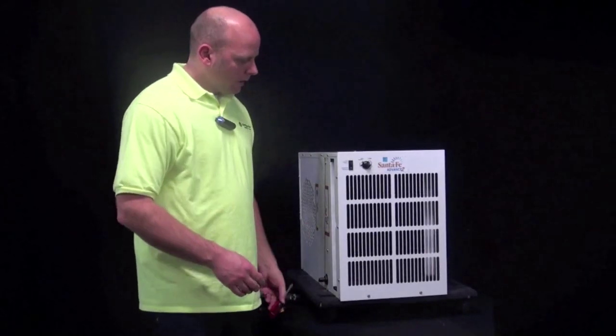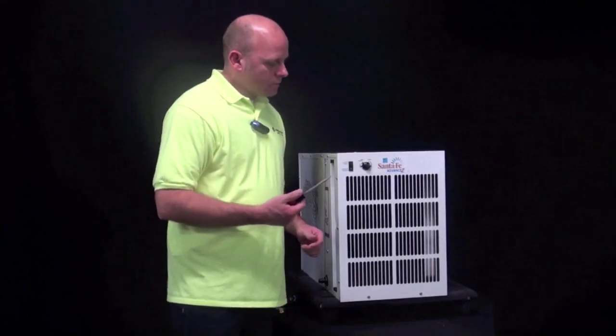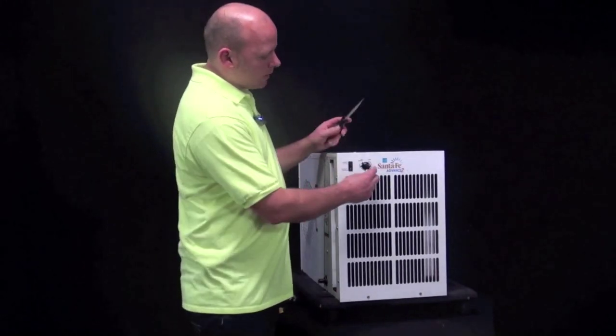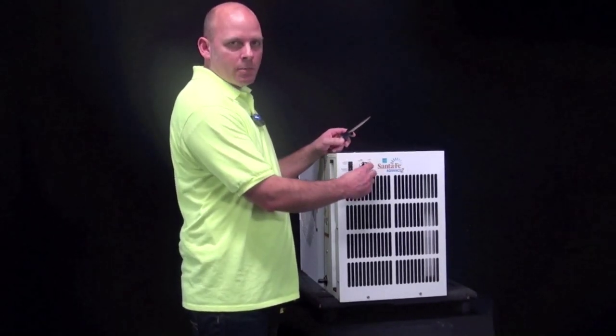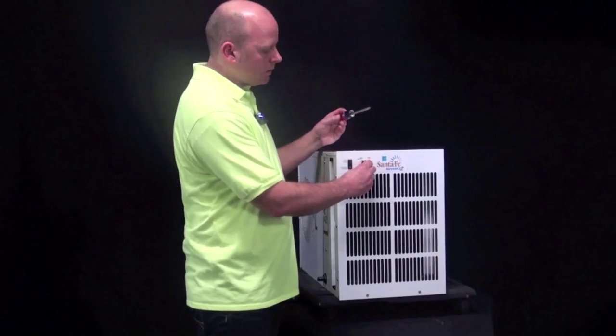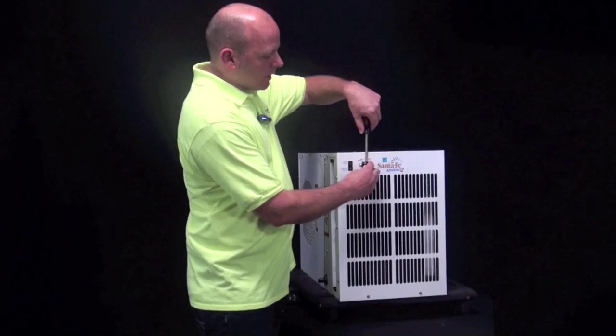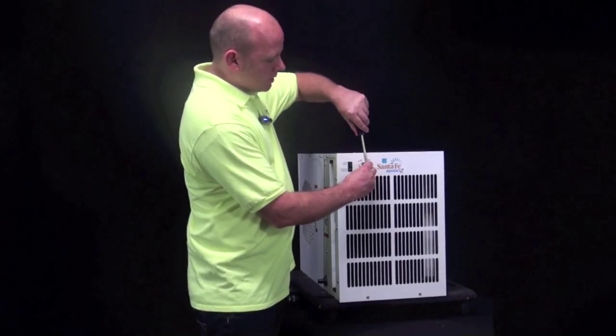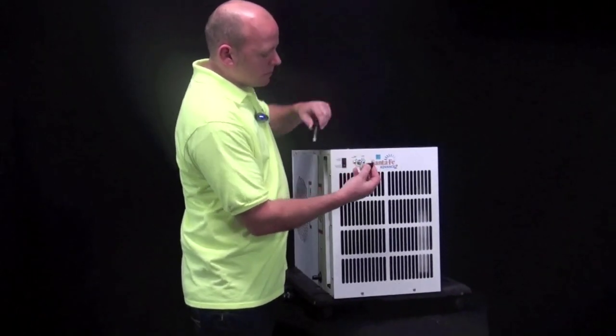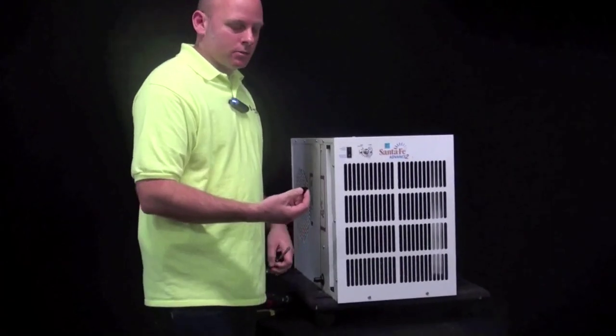And then from here, you're going to need a flat screwdriver so you can pry the black control knob off the post of the dehumidistat. So you just put the screwdriver between the knob and the cabinet and just twist and pull at the same time and then you'll remove the knob.